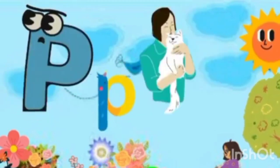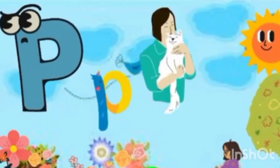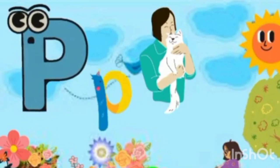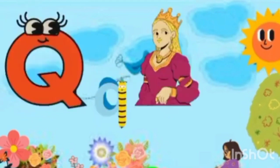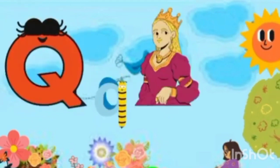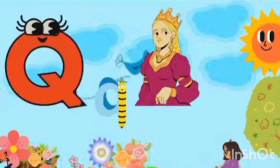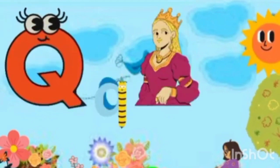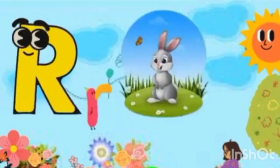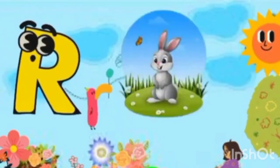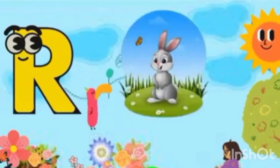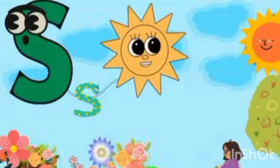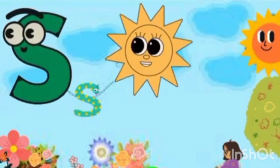P is for pet. P, pet. Q is for queen. Q, queen. R is for rabbit. R, rabbit.